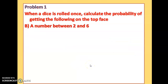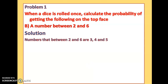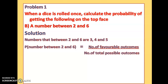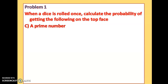For part (b), a number between 2 and 6: the numbers between 2 and 6 are 3, 4, and 5. Using the formula, there are 3 favorable outcomes in the numerator and 6 in the denominator. Simplifying 3 by 6 gives 1 by 2.